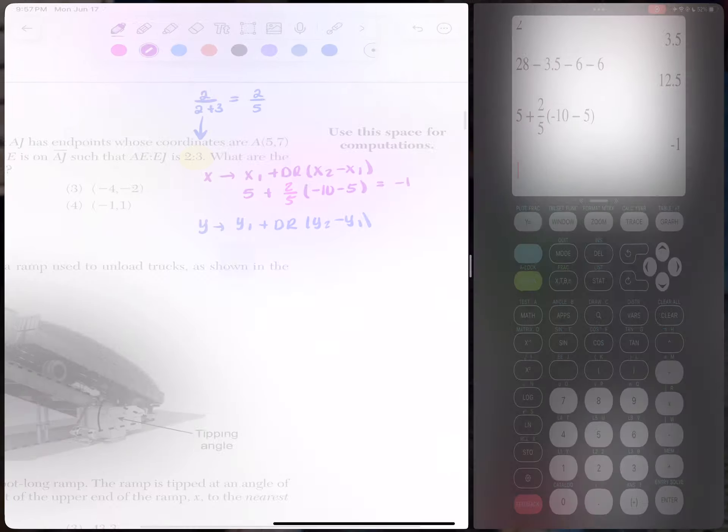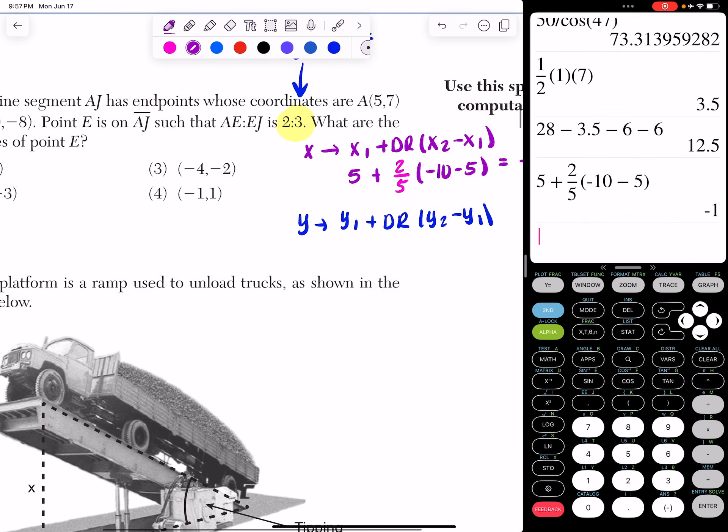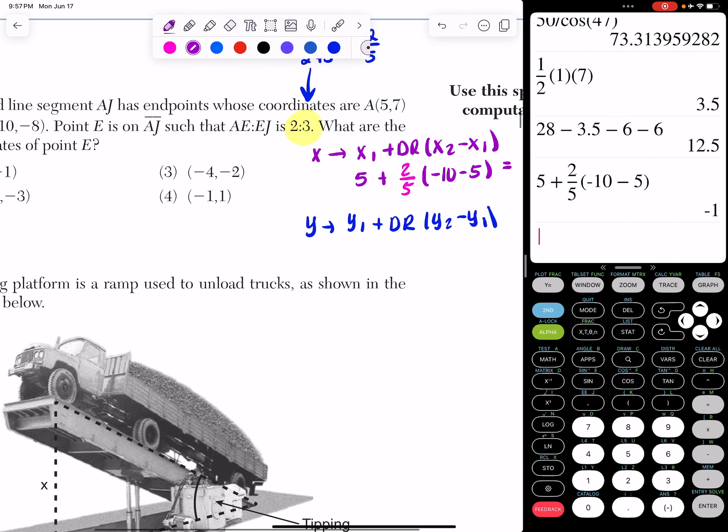Now I'm going to do the exact same procedure with my Y values. So my first Y value is positive 7. So I'm going to do 7 plus my distance ratio of 2 fifths, which we got from the beginning. And now I'm going to do my second Y value minus my first Y value. So if I look, my second Y value is negative 8 and my first is 7.